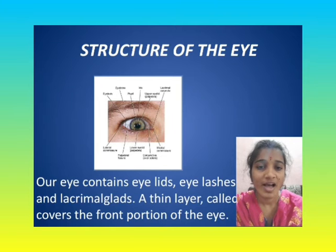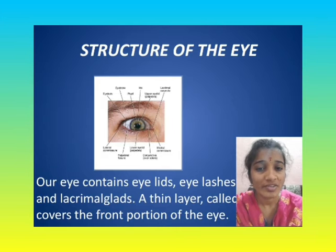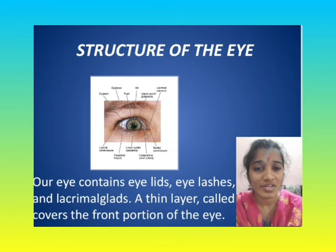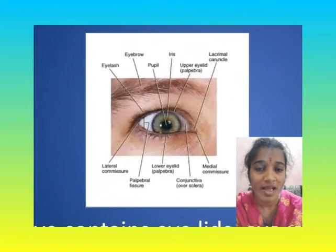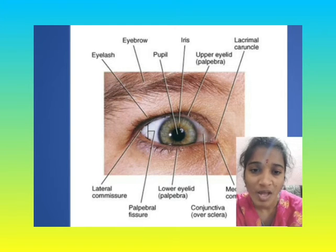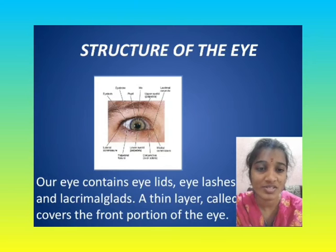Our eye contains eyelids, eyelashes, eyebrows, and lacrimal glands. A thin layer called conjunctiva covers the front portion of the eye. The eye has eyebrows, eyelashes, iris, upper eyelid, lower eyelid, and conjunctiva. This is the structure of the eye.